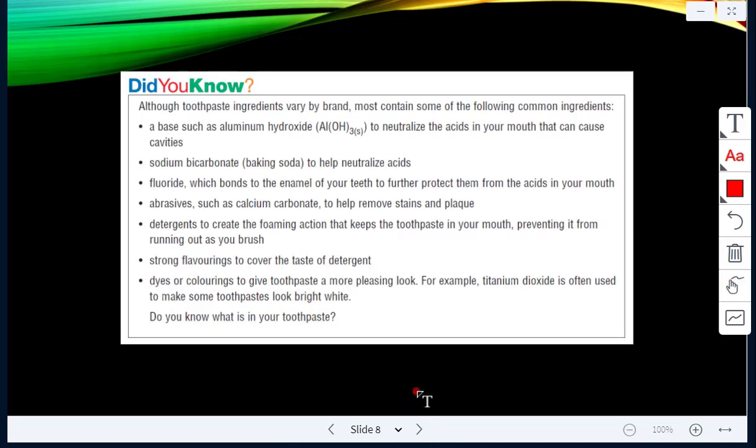This is just from the textbook, a little did you know some facts about toothpaste. The ingredients in toothpaste vary by brand, but the most common toothpaste will contain these ingredients that are common. So for example, aluminum hydroxide, it's a base, it neutralizes the acids in the mouth that can cause cavities. Another one is sodium bicarbonate. For example, in the kitchen it's baking soda. It also helps to neutralize acids.